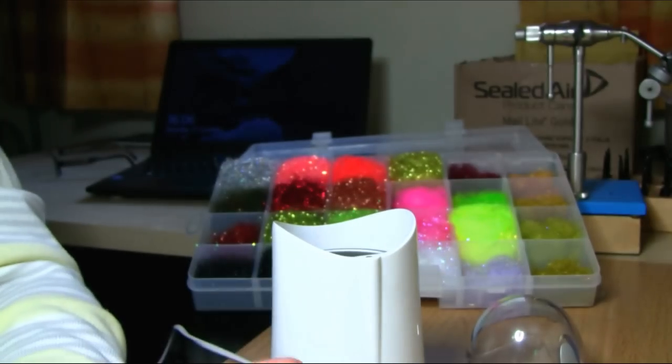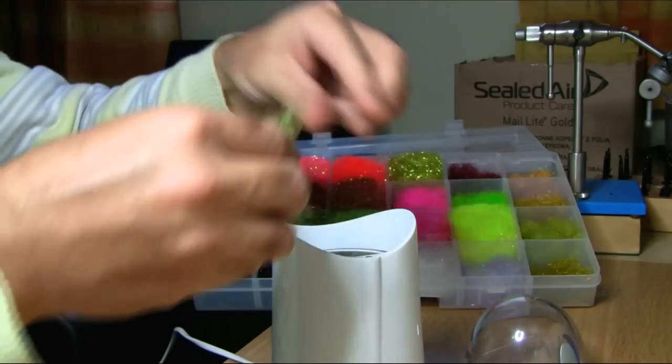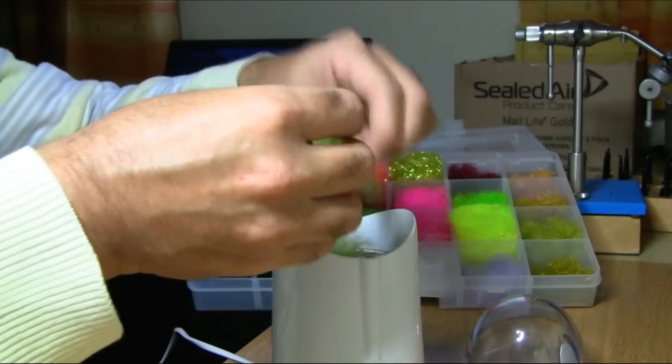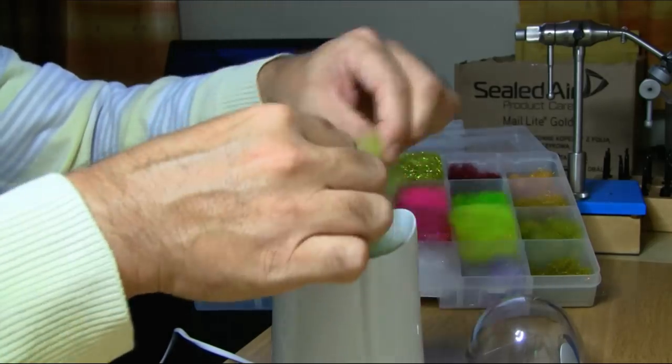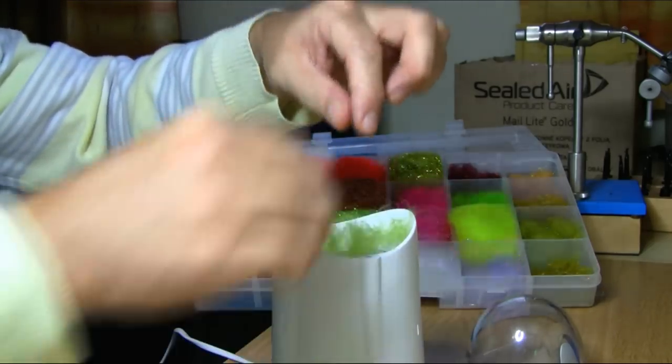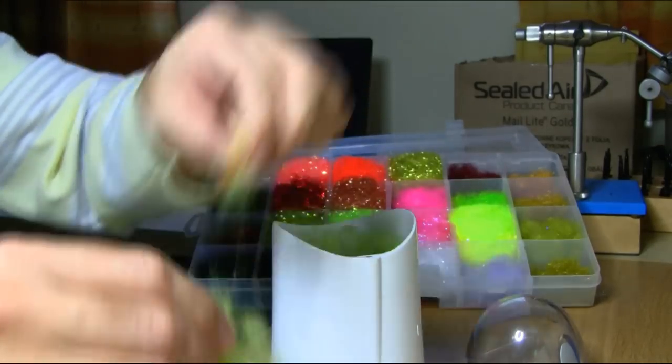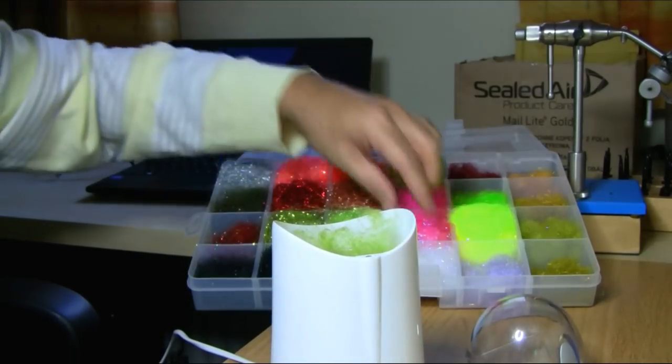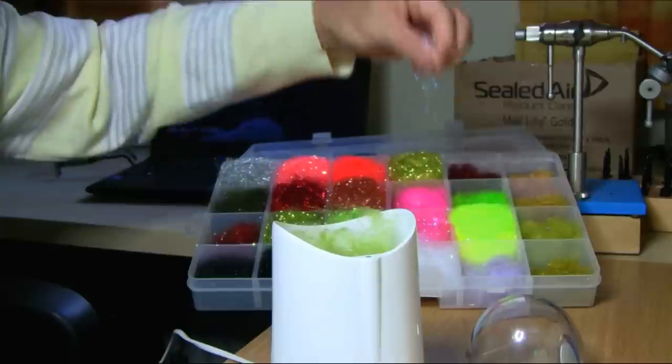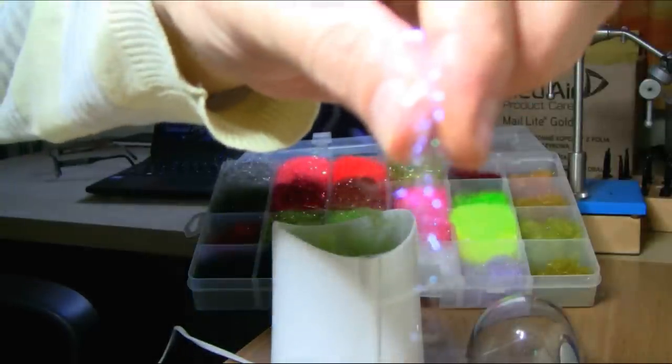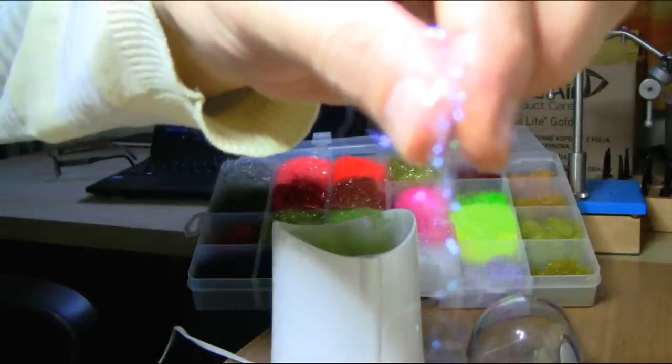But if you want to add a little bit of flash in it, I'll just show you the other one there with the flash. Not too much. And colors. You can make your own different colors. So this is a UV dubbing. As you can see. Sparkle dubbing.